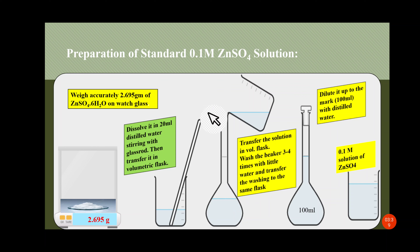Now see the preparation of standard 0.1 molar zinc sulfate solution. Weigh accurately 2.695 grams of zinc sulfate hexahydrate on a watch glass. Then dissolve that salt in 20 ml of distilled water, stirring with a glass rod. Transfer the solution into the volumetric flask and wash the beaker 3 to 4 times with a little amount of water, transferring all the washings to the same flask.